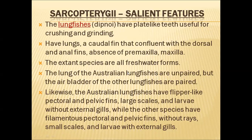Only in three continents do lungfishes live: the Australian continent, the African continent, and South America. Out of these three, the Australian lungfish has only a single lung; the remaining lungfishes have two lungs, or their air bladder is divided into two lungs. The Australian lungfish also shows features like flipper-like pectoral and pelvic fins, large scales, and larvae without external gills. These features are confined to the Australian lungfish. The other species have filamentous pectoral and pelvic fins, without trace in the fins, and small scales; the larvae of these remaining lungfishes possess external gills.